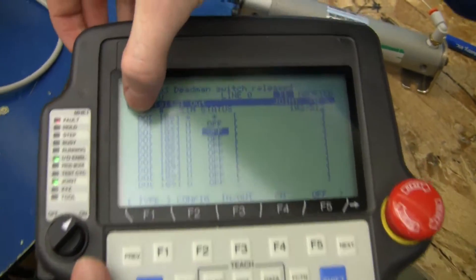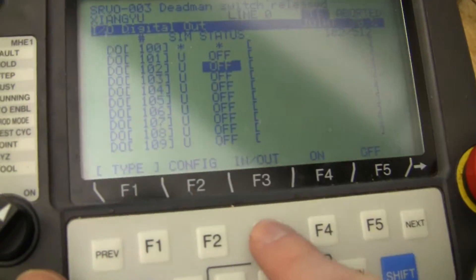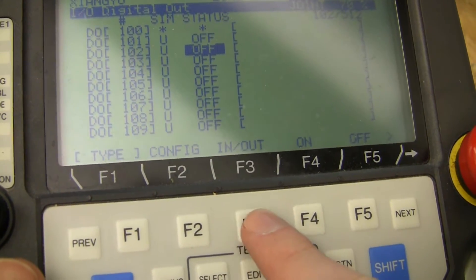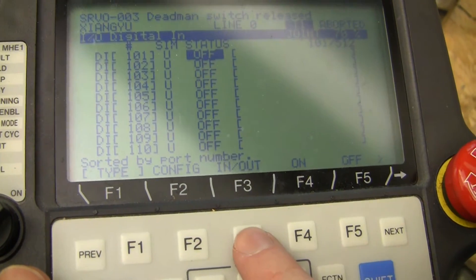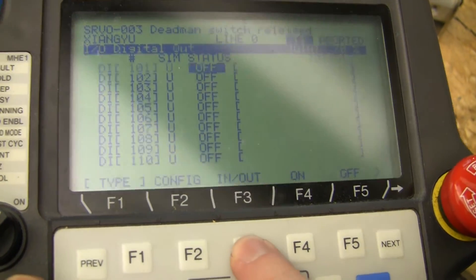So you might be in digital out or you might start in digital in. You switch between the two by pressing F3 for in and out. This is digital inputs, this is digital outputs.